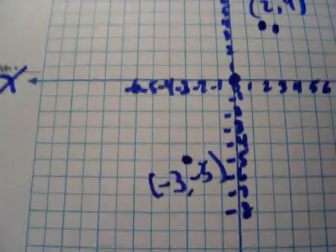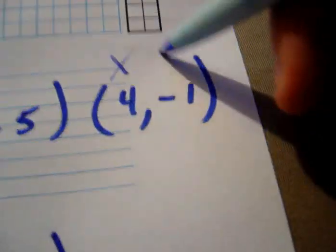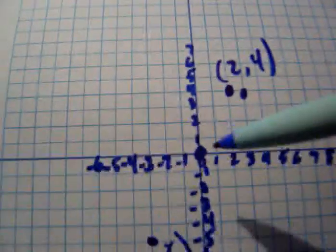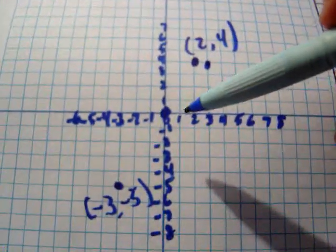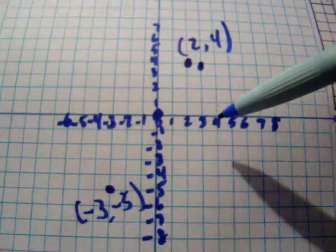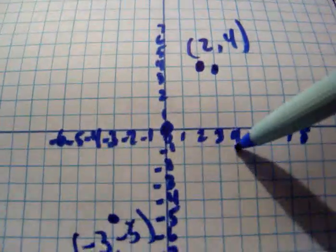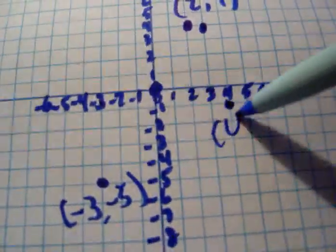Next, four comma negative one. It's always the x direction, and then the y direction. Let's start at the origin and find four on the x-axis: one, two, three, four — and then negative one. Negative one takes you down a distance of negative one. Right there — four comma negative one.